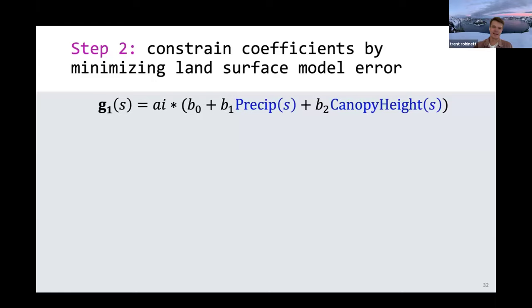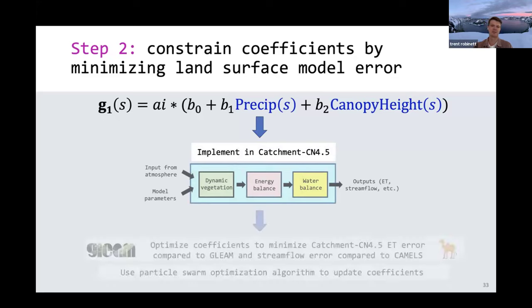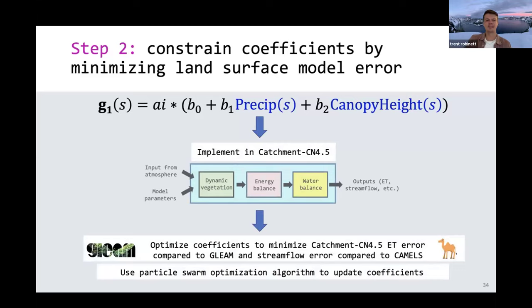Now that we've selected this final form of linear equation, we proceeded by taking it and replacing the PFT-based g1 in Catchment-CN4.5 with this linear equation to predict g1 in Catchment-CN4.5. And then we optimized and found the optimal values of these a and b coefficients by optimizing them against Catchment-CN4.5 ET compared to GLEAM, and then trying to minimize stream flow error in Catchment-CN4.5 compared to CAMELS. We ultimately used the particle swarm optimization algorithm to iteratively update these coefficients and converge on the best predictive equation for g1.